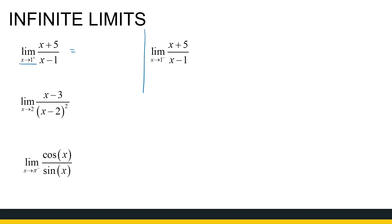As x approaches one from the positive side, x is just bigger than one, so my numerator is positive and my denominator is also positive but very close to zero. So that gives positive infinity. As x approaches one from the negative side with the same fraction, my numerator is still positive but my denominator is now negative and very close to zero — so that's a negative large number, minus infinity.